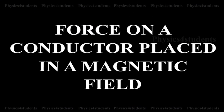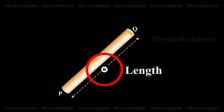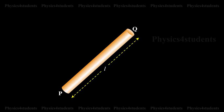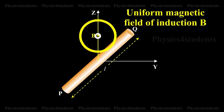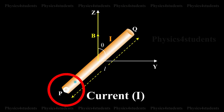Force on a current-carrying conductor placed in a magnetic field. Let us consider a conductor PQ of length L and area of cross-section A. The conductor is placed in a uniform magnetic field of induction B, making an angle theta with the field. A current I flows along PQ.